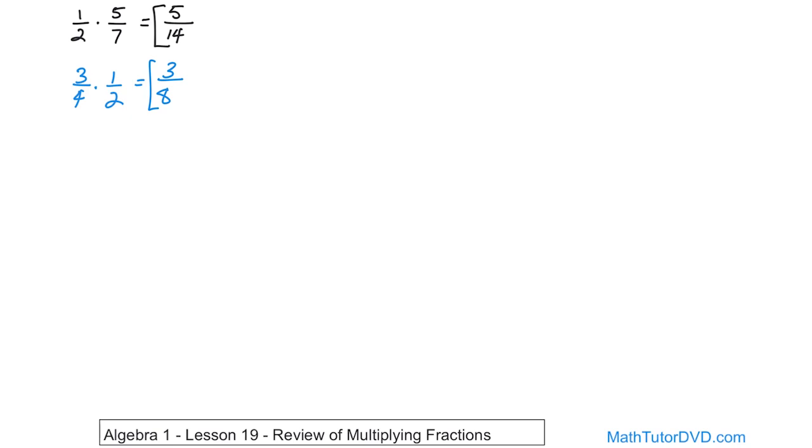What if you had 3 fourths times 2 sixths? You multiply the top. 3 times 2 is going to give you 6 on the top, and then you multiply the bottom. 6 times 4 is 24, and you ask yourself, is this fully simplified? Now, in this case, it's not, because 6 24ths, I can divide the top by 6 and the bottom by 6. 6 divided by 6 is 1. 24 divided by 6 is 4, because 6 times 4 is 24, and so you have the answer of 1 fourth. That is the final answer to that problem.